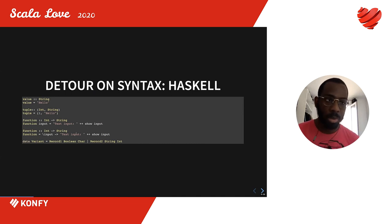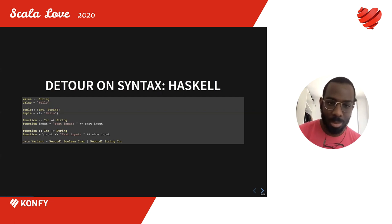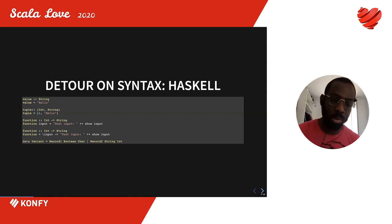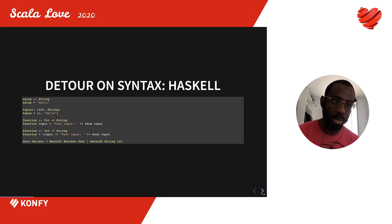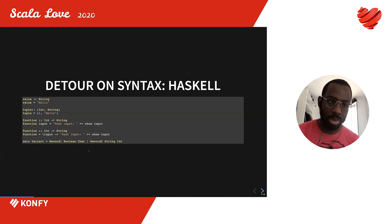The second language I will use is Haskell. As Haskellers like to say, you should all learn Haskell for great good. In Haskell, the first line gives the signature of a value or function, and then you give the implementation. I'll show a value of type string, a tuple of integer and string, a function from integer to string, a lambda function, and a variant type — an alternative between record one (boolean, char) and record two (string, int).